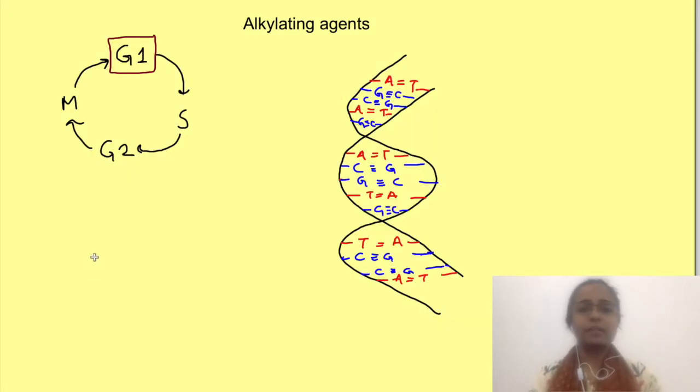The first class of anticancer drugs is alkylating agents. These drugs act on G1 phase. They bind to guanine nucleotide in DNA strand and this causes cross-linking of DNA strands. So they are binding on this guanine and this guanine and they will interlink.